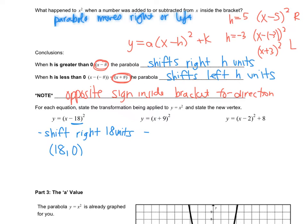Y equals x plus 9 all squared: plus 9 means to the left 9. So shift left 9 units. Moving to the left means we're in the negatives, so the vertex is negative 9, 0. For the next one, we have an h value in the brackets and a k value outside the bracket, so pause the video and try to state the two transformations: one right-left movement and one up-down.